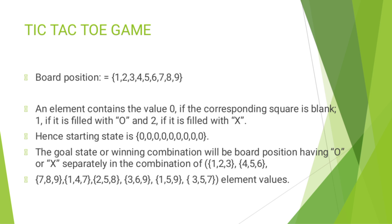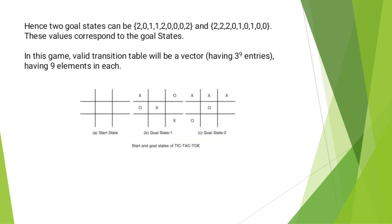The goal state must be, for example, 2,0,1,1,2,0,0,0,2 or 2,2,2,0,1,0,1,0,0. In this game, the valid transition table will be a vector having 3 to the power 9 entries, with 9 elements in each. In this diagram, the starting state is the null value (0). The next one is goal state 1, where the condition is satisfied in a diagonal way. In goal state 2, the condition is satisfied by the horizontal way. Thank you.